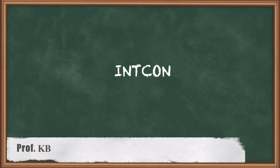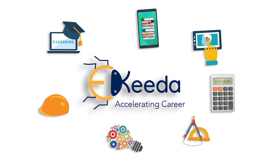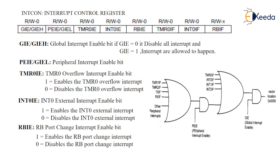Hello students, today we'll see the INTCON register. This INTCON register is associated with interrupt control and is assigned in SFR. We have already seen one bit of INTCON for timer as well as serial communication. The seventh bit of the INTCON interrupt control register is used to enable the interrupt — it is GIE, the Global Interrupt Enable bit. If GIE equals 0, it disables all interrupts; if GIE equals 1, interrupts are allowed to happen.